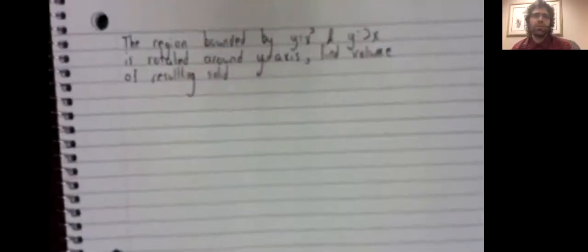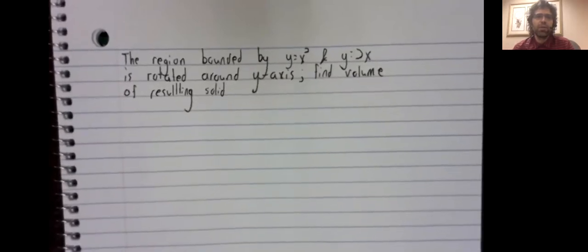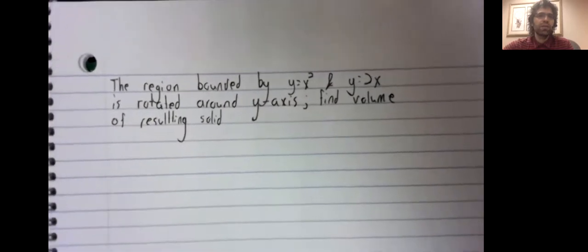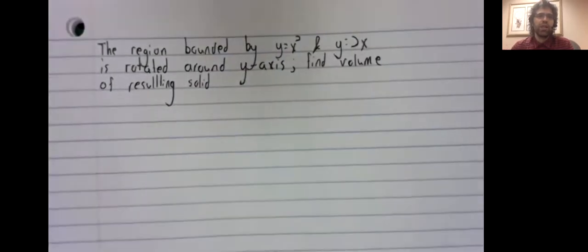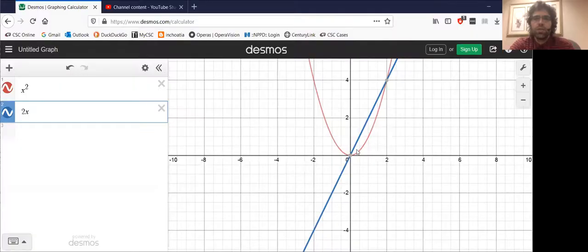In particular, let's take the region bounded by y equals x squared and y equals 2x and rotate it around the y-axis and find the volume of the resulting solid. We'll start by taking a look at the region. So this region here, and we're rotating it around this line.